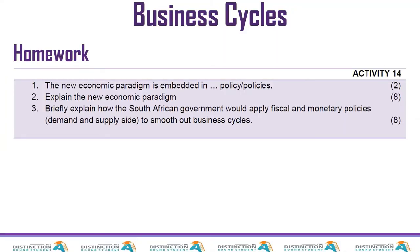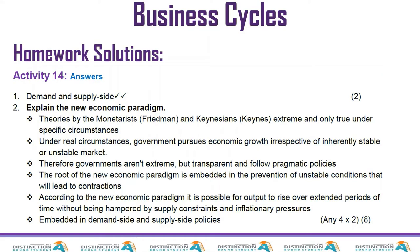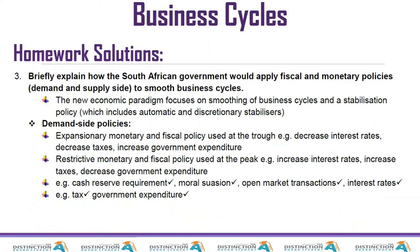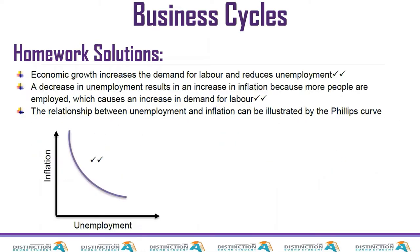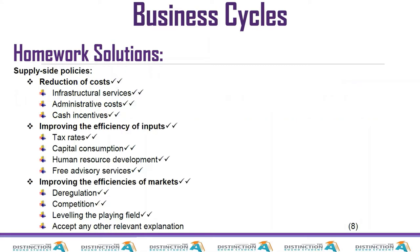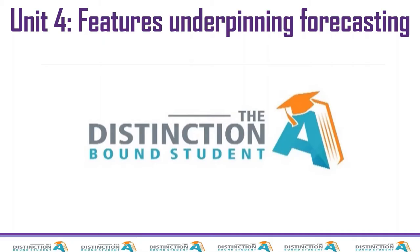As usual, we start with our homework. Question number one was: the new economic paradigm is embedded in demand and supply side policies — explain the new economic paradigm for eight marks, and briefly explain how the South African government would apply fiscal and monetary policy to smooth out business cycles. I'm just going to give you the answers so you can mark yourself. I hope you did the homework. Just pause the video and get going.